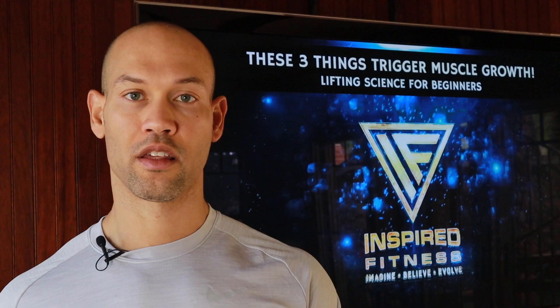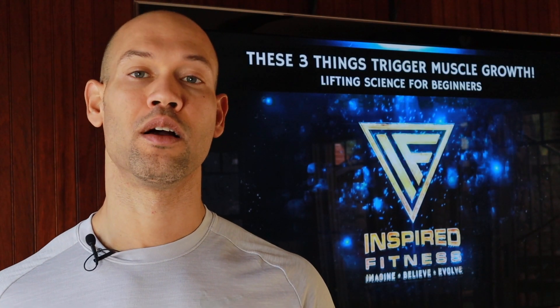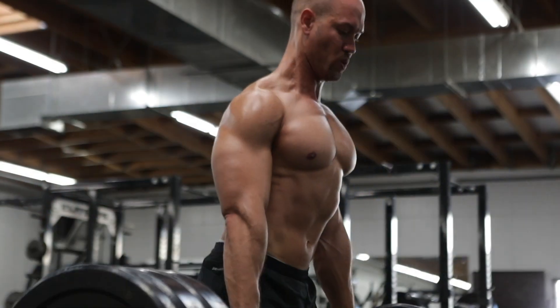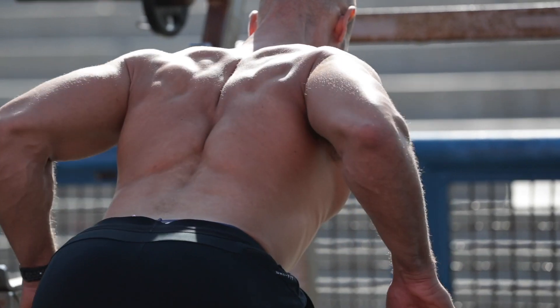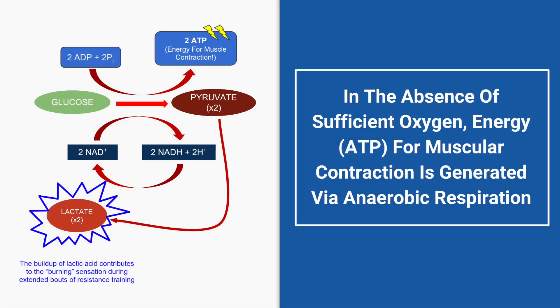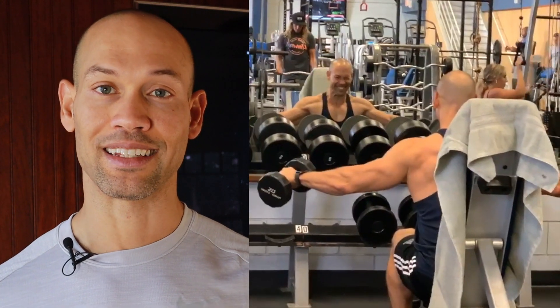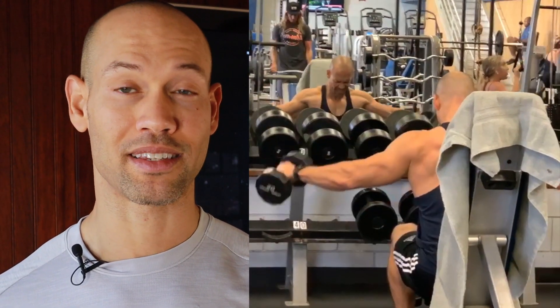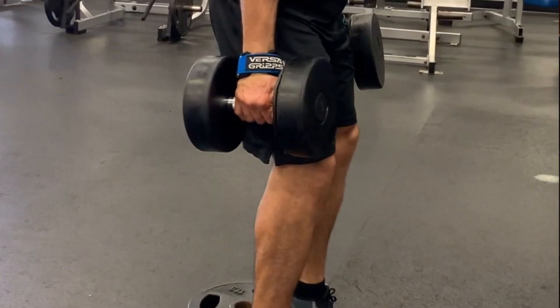The third trigger of muscle hypertrophy is what is called metabolic stress. As with any other biological function, muscle cells require energy in order to contract. During sustained periods of resistance training, energy generation often needs to occur in the absence of oxygen — this is called anaerobic metabolism. During anaerobic energy generation, various waste products accumulate within muscle cells. These waste products need to be eliminated, but the rate at which they are produced often exceeds the rate at which they can be cleared.